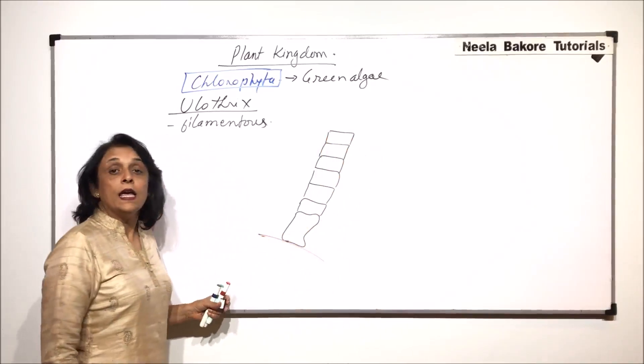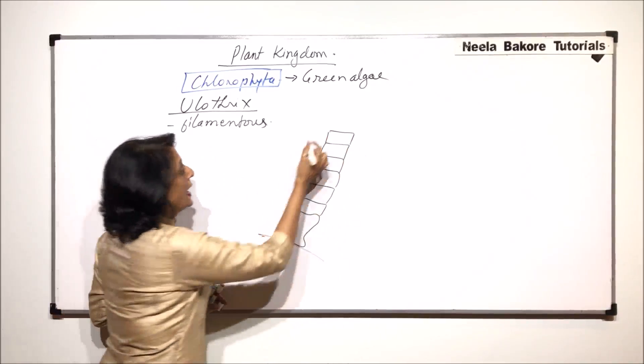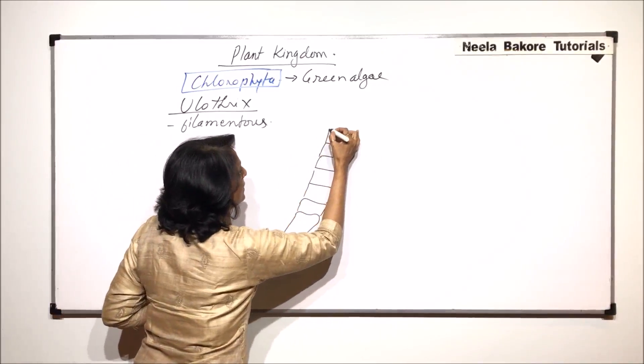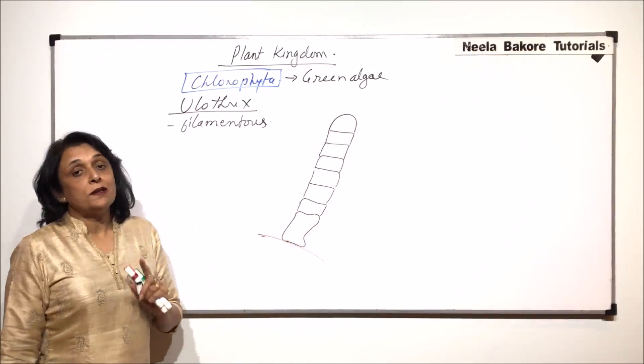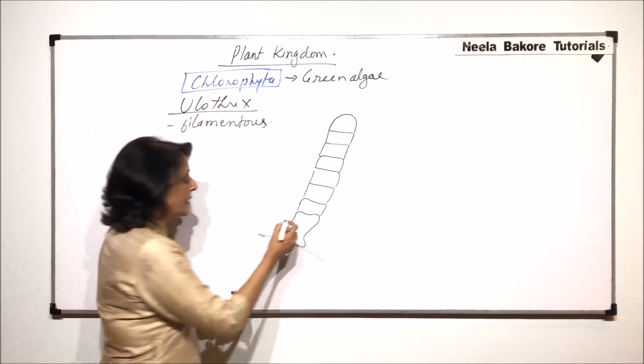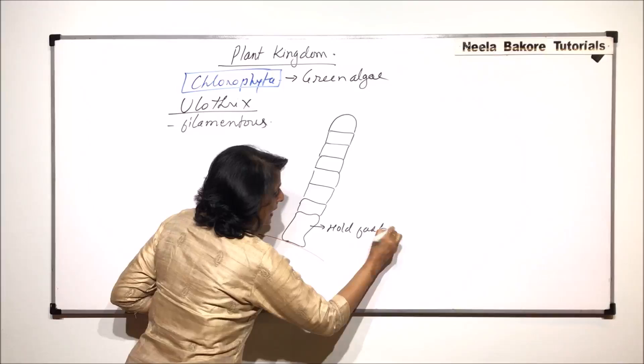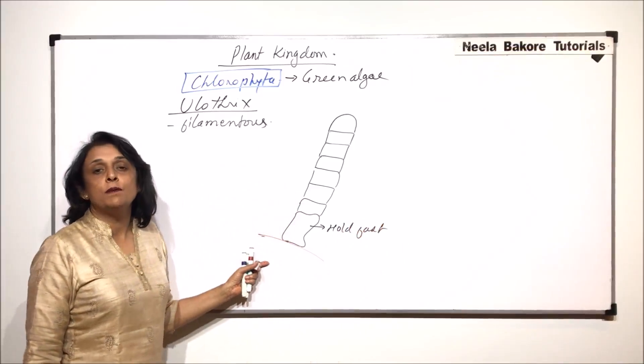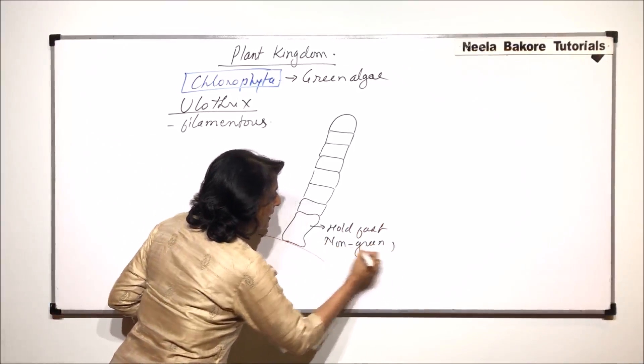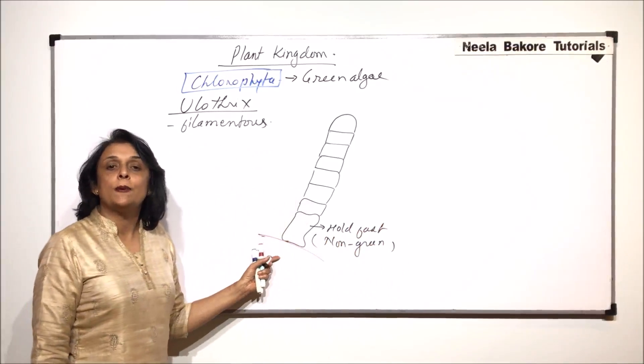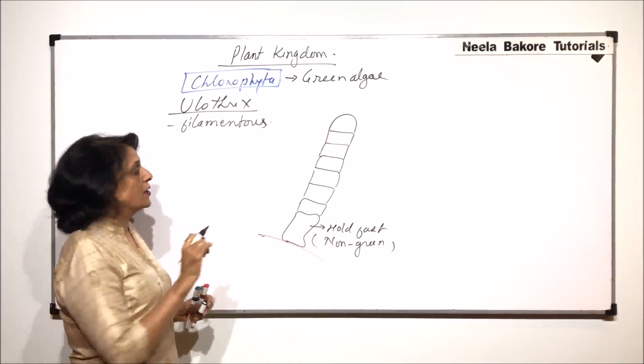Now each cell, if you observe carefully, is more in width and less in height. Except for the top cell, the topmost one is little semi-circular. So there are three types. One is little elongated and this is known as the holdfast. Its job is to hold the filament to the substratum and it is normally non-green. That means here chloroplast chlorophyll is absent. And the uppermost cell is semi-circular.